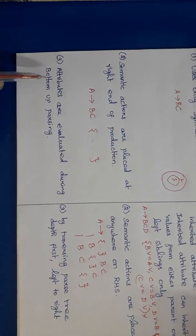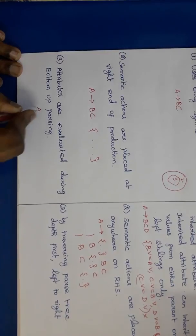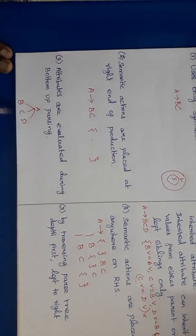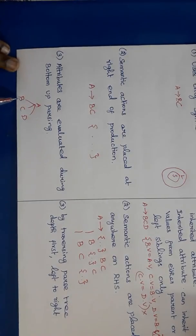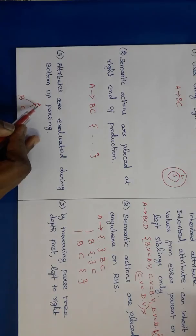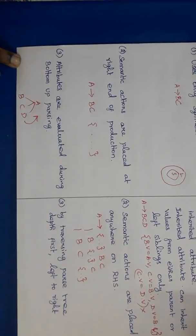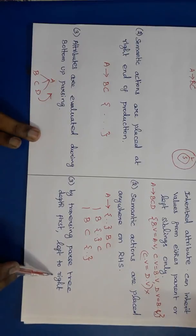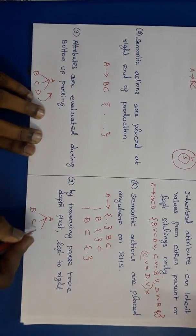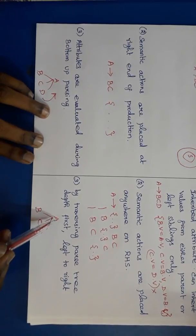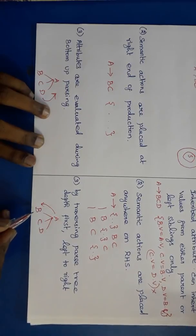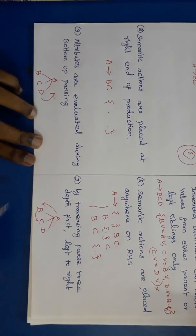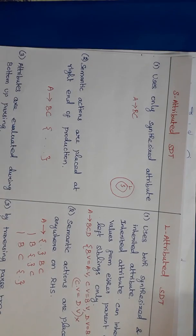The third difference is that in S-attributed SDT, attributes are evaluated during bottom-up parsing. A's value can be evaluated from B, C, and D only because it uses only synthesized attribute — so after finding the values of B, C, and D, we can find A's value, evaluated from bottom to top. In L-attributed SDT, attributes are evaluated by traversing the parse tree depth-first and left to right.